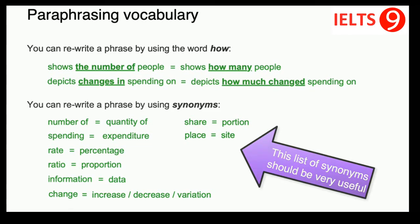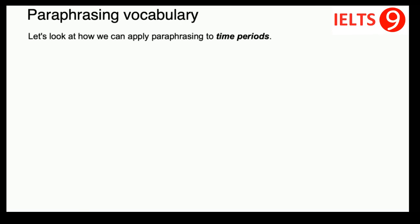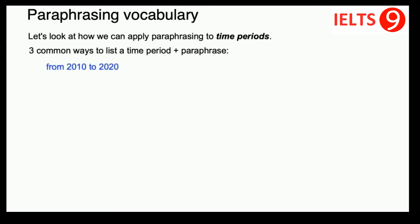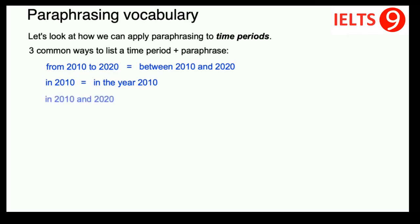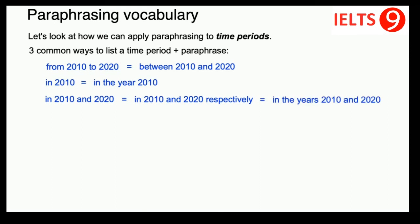Now let's look at how we can apply paraphrasing to time periods. Here are three common ways to list a time period and their paraphrases: 'from 2010 to 2020' or 'between 2010 and 2020'; 'in 2010' or 'in the year 2010'; and 'in 2010 and 2020' or 'in the years 2010 and 2020.'